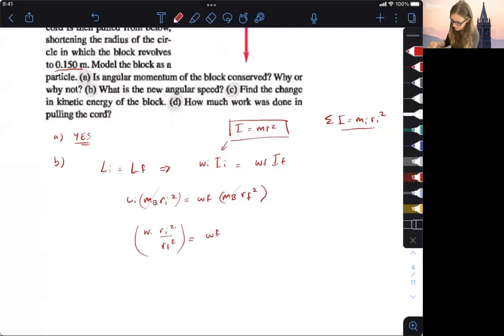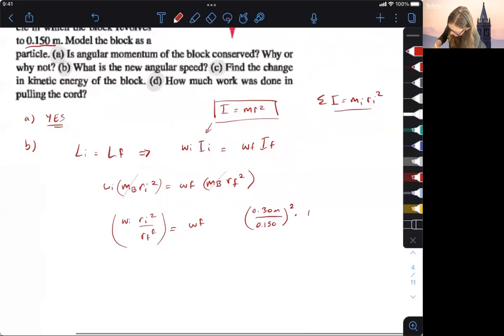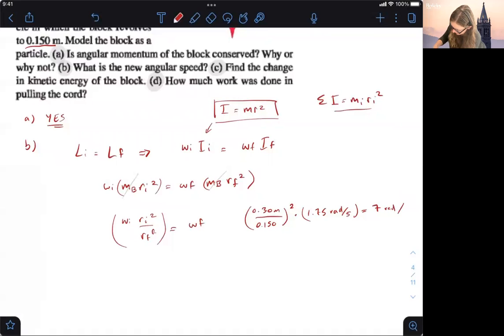So the initial times just basically the change in radius squared. So that is going to be equal to 0.30 meters over, what is our final, 0.150. So basically this is like one half squared. And then what was our WI, sorry, I changed the order here, but it should be the same. So 1.75 radians per second. And that is going to be equal to 7 radians per second.